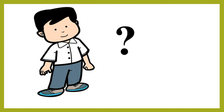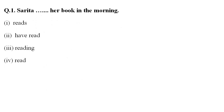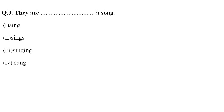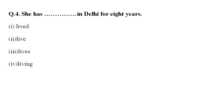Let's see what we have learned from the tenses taught in this module. Question one: 'Sarita __ her book in the morning' — options are reads, have read, reading, or read. The correct answer is 'reads.' Question two: 'Neetu is __ to visit the zoo' — options are go, went, gone, or going. The correct option is 'going.' Question three: 'They are __ a song' — options are sing, sings, singing, or sang. The correct option is 'singing.' Question four: 'She has __ in Delhi for eight years' — options are lived, live, lives, or living. The correct option is 'lived.'